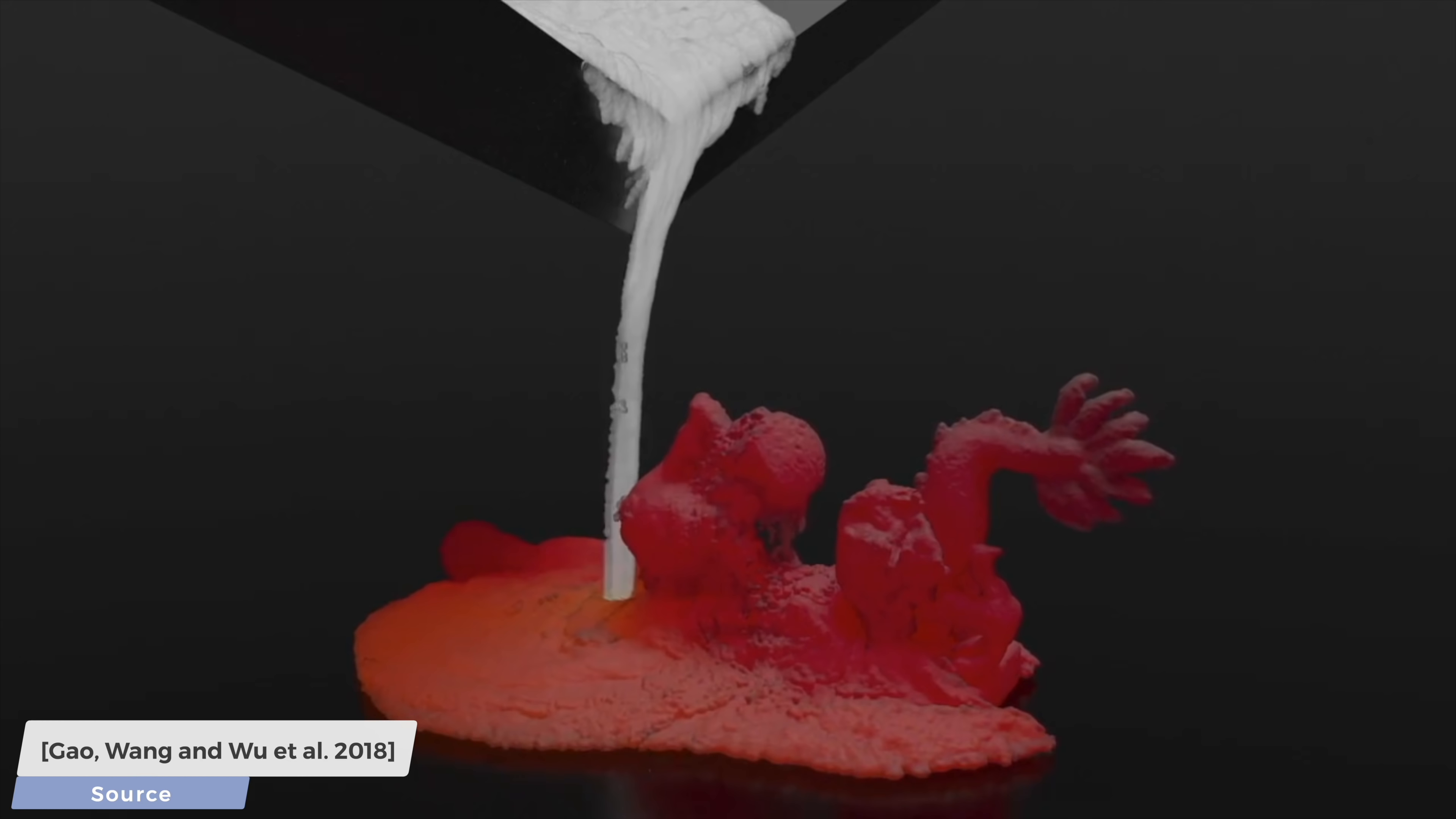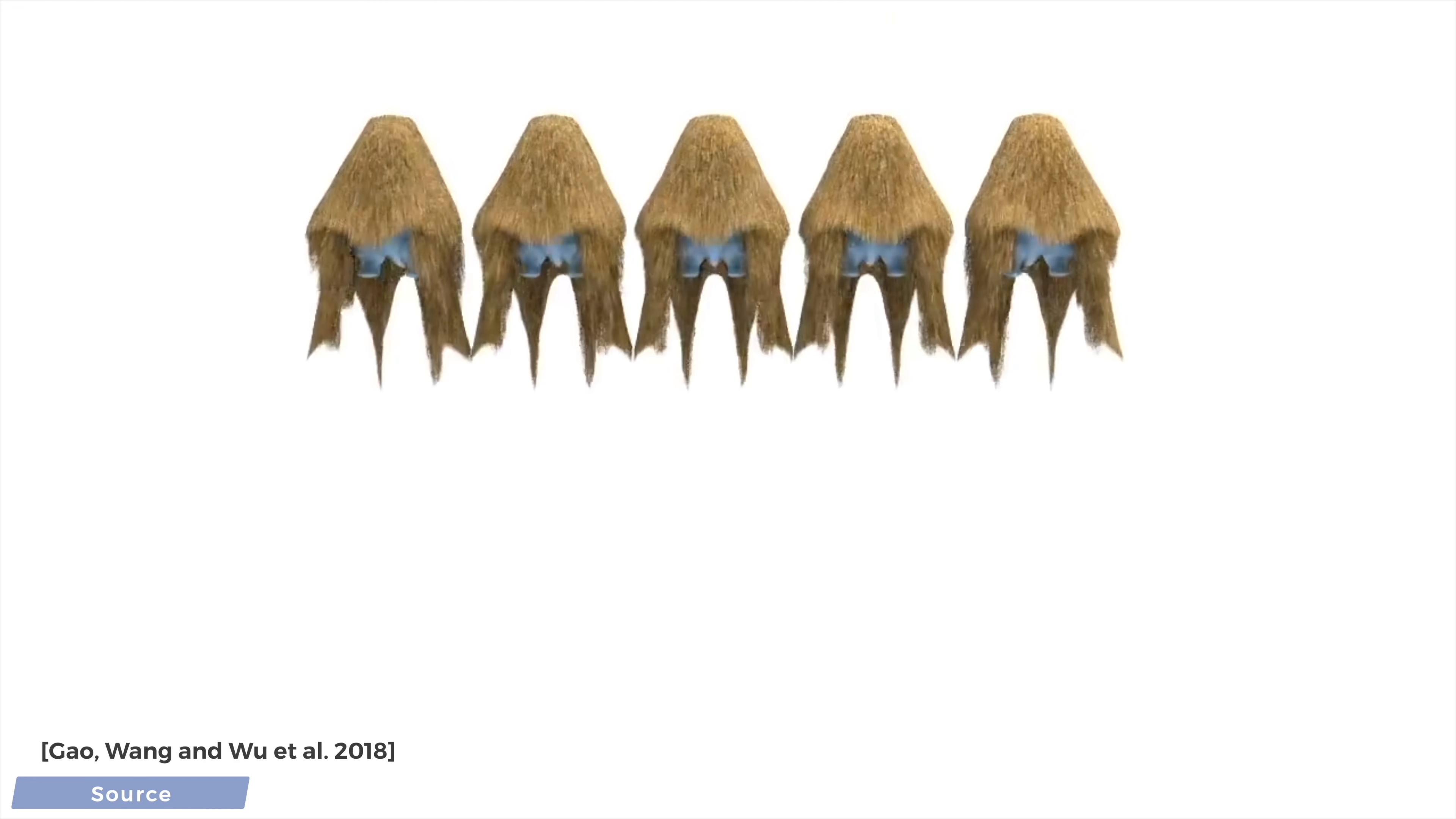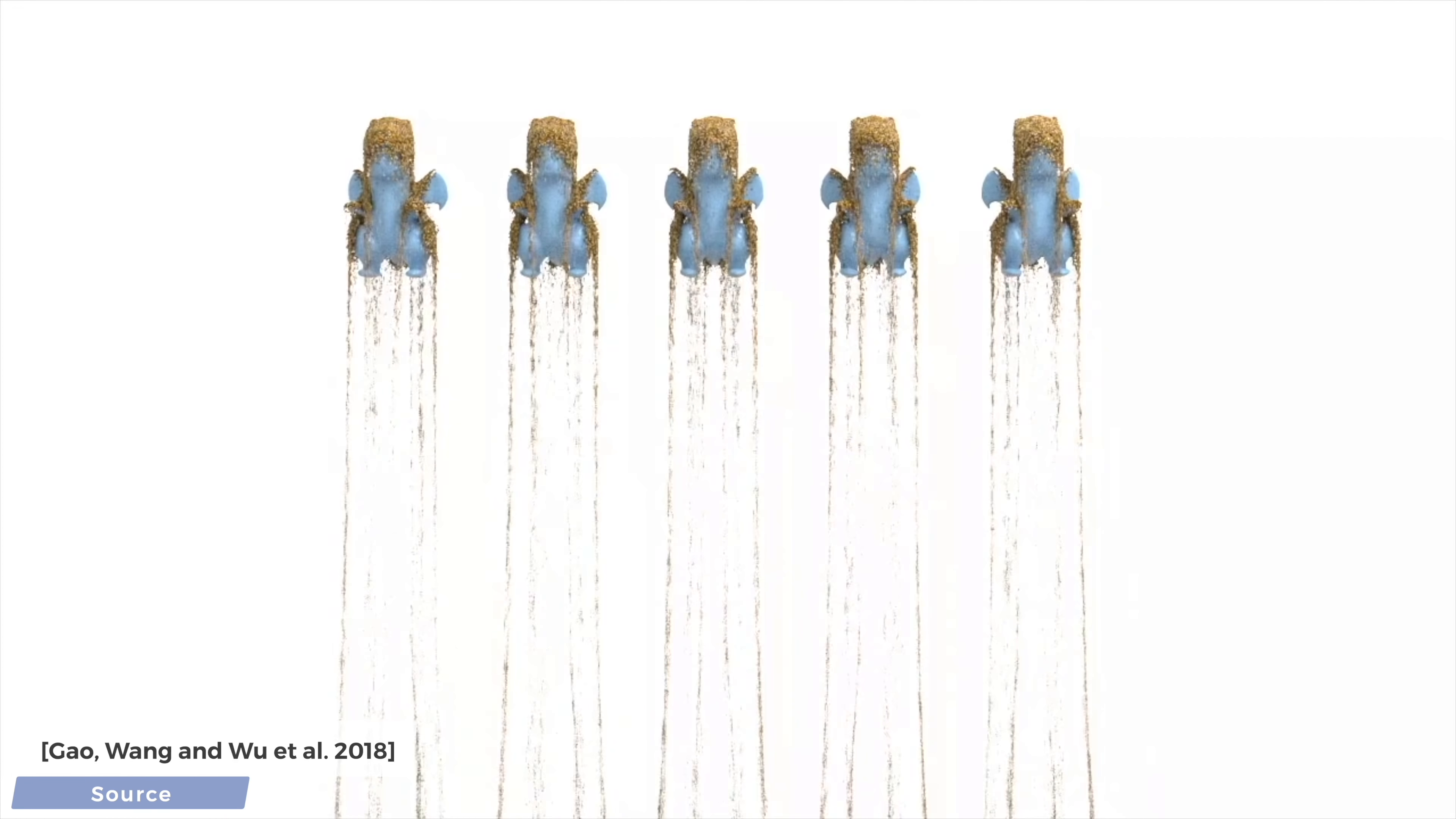So here you go, this technique enables running MPM on your graphics card efficiently, resulting in an up to 10 times improvement over previous works. As a result, this granulation scene has more than 6.5 million particles on a very fine grid, and can be simulated in only around 40 seconds per frame.